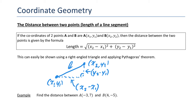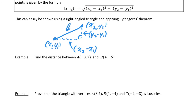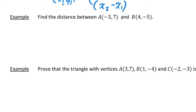So by Pythagoras, L squared is going to be equal to this horizontal side squared plus the vertical side squared, so that means L is going to be equal to the square root of those two things squared and added together. I'm going to use this formula for the next example.